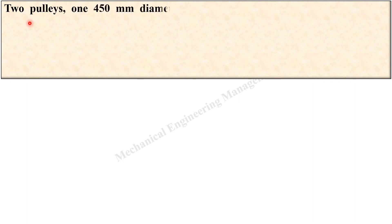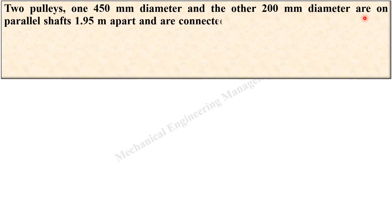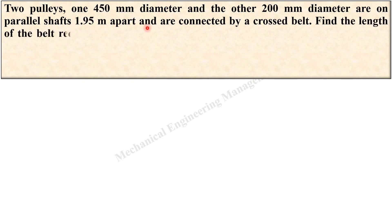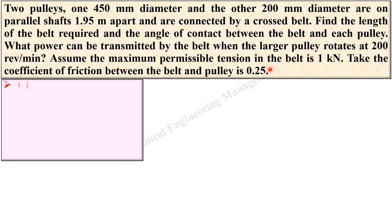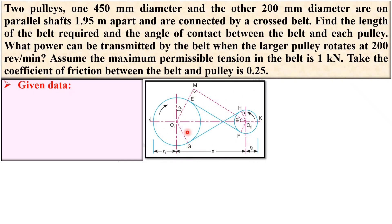Let us first see the description. Two pulleys, one 450 mm diameter and the other 200 mm diameter, are on parallel shafts 1.95 meters apart and are connected by a cross belt. Here you can see the arrangement — x is the distance between the shafts.